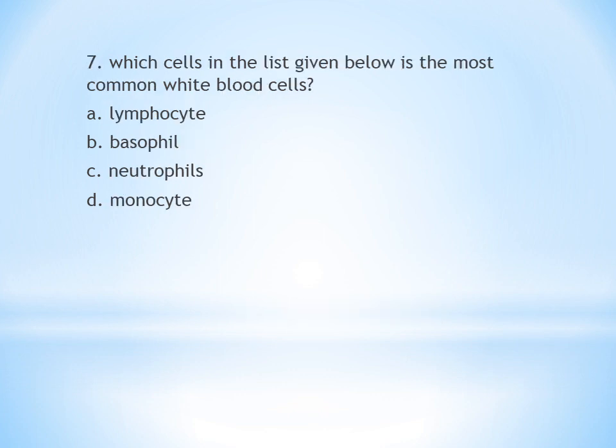Seventh question: Which of the following cells is the most common white blood cell (leukocyte)? A. Lymphocyte, B. Basophil, C. Neutrophil, D. Monocyte. Answer is neutrophil. Neutrophils make up 50 to 70% of WBCs and are the most common cell.